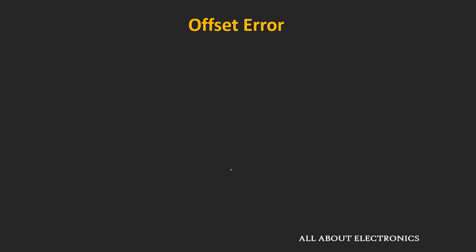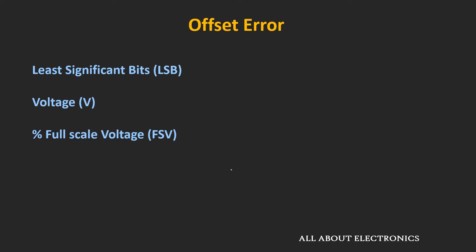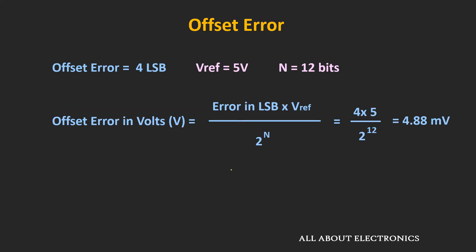This offset error can be measured in three ways: in terms of LSB, in terms of voltage, and in terms of percentage of the full-scale voltage. For example, for a 12-bit ADC with a 5V reference voltage, if the offset error is 4LSB, then in terms of voltage it equals the error in LSB multiplied by the reference voltage divided by 2 to the power n, where n is the number of bits. In this case the offset error equals 4.88mV.